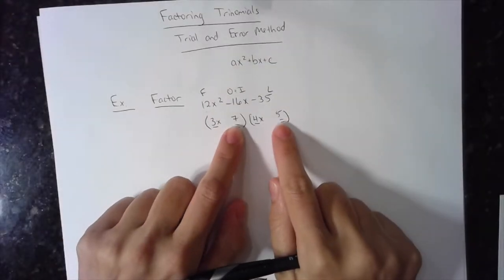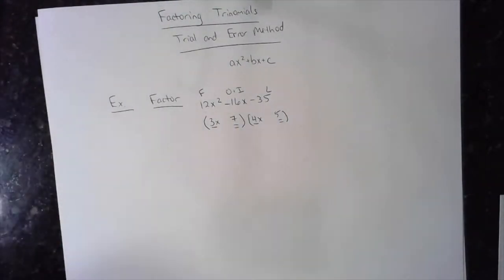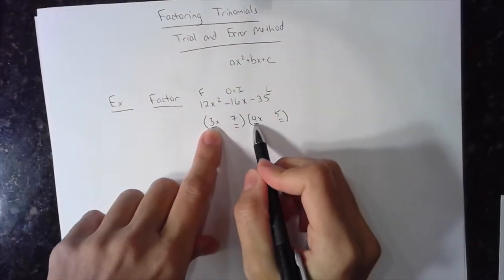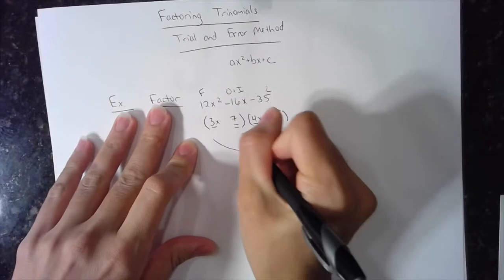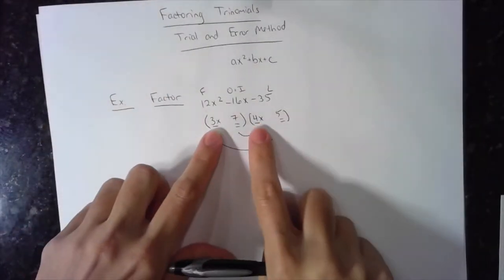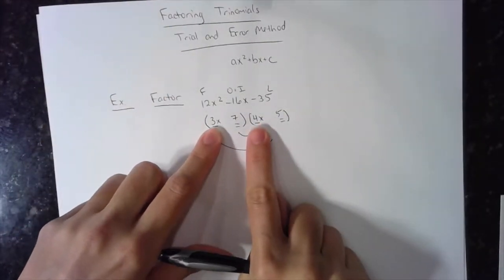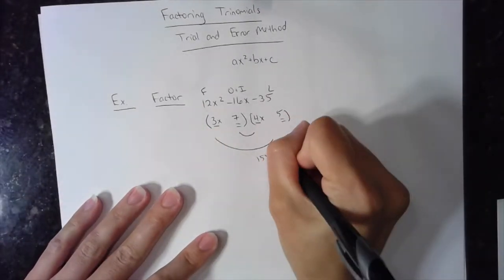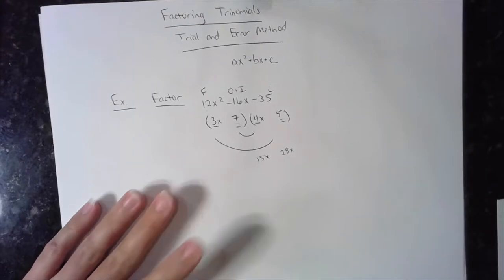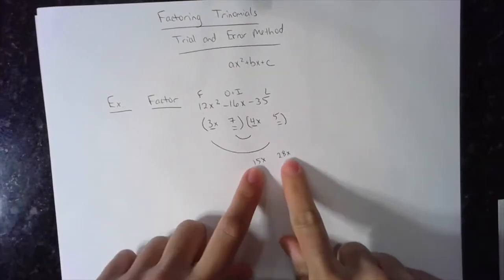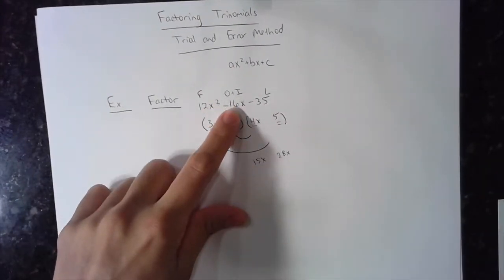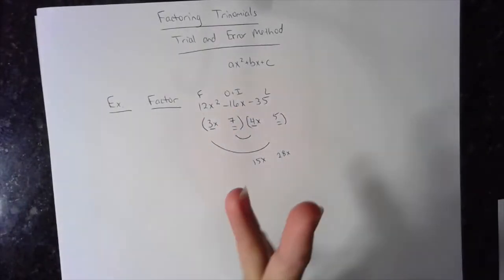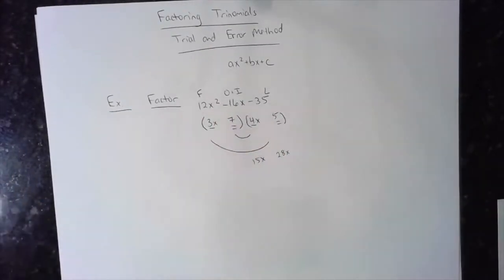Now the location of these numbers is going to be very important, okay? Because these two have coefficients. So now my outer and my inner are affected by the coefficient in front of me. My outer is going to give me a 15x. My inner is going to give me a 28x. I want to know, are they going to combine in any way to give me a 16 or a negative 16? No matter what the signs are, a 15 and a 28 can never give me a 16, which means wrong.